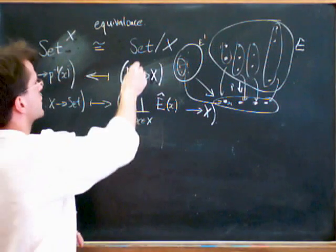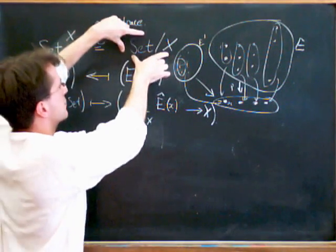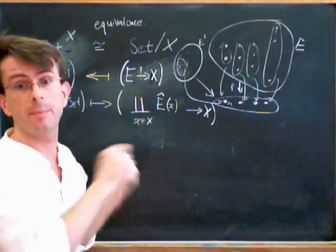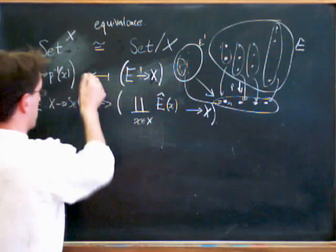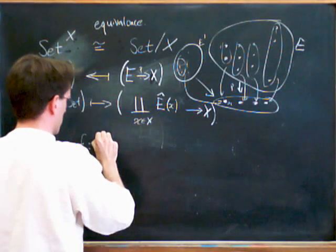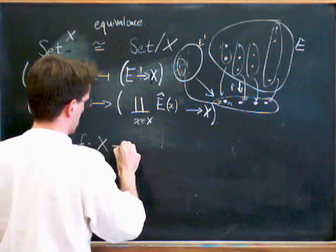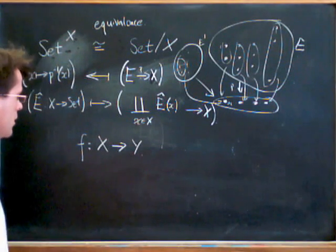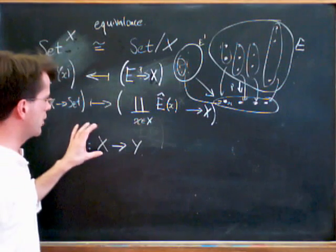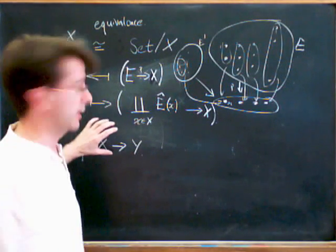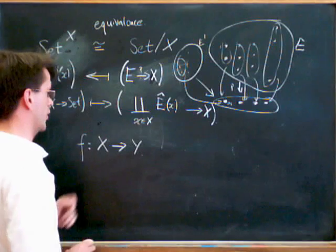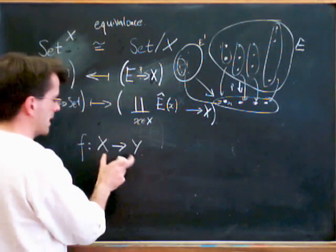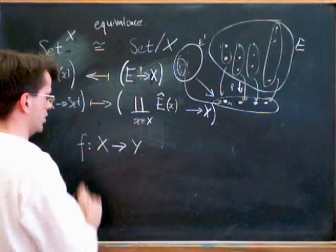So this is an association of, if I've got a set, I get a category out of it. So what happens if I then have a map between sets? So I've got f going from a set X to a set Y. So if you know anything about bundles, or anything in topology or algebraic geometry, then you know you've got various associated maps between bundles or between sheaves.